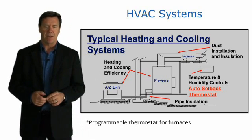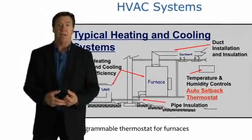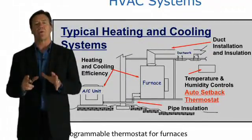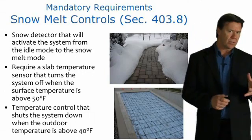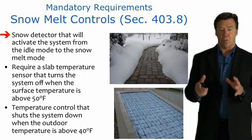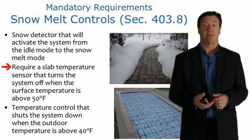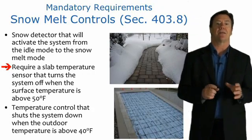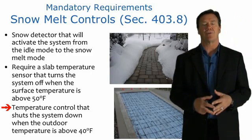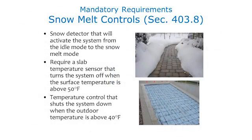We want adequate sizing. Each individual system — distribution system, outdoor system, furnace, and air handler — must have its own setback thermostat. For snow melt controls, we must have a snow detector that activates the system from idle to snow melt mode, a slab temperature sensor that turns the system off when the surface temperature is above 50 degrees, and a control that shuts the system down when the outdoor temperature is above 40 degrees. Nowhere in the Kentucky residential code is a snow melt system required, but if one is provided, these controls are mandatory.